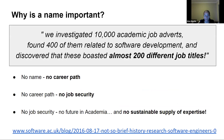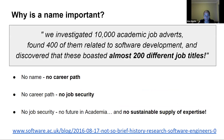Why was it so important that the SSI coined the term RSE? Around 2012, shortly after, they did a study looking at academic job adverts with some relationship to software development, and discovered there were almost 200 different job titles associated with those roles. The argument is: if there is no name for a role, there is no career path. If there's no career path, there's no job security. And if there's no job security, there's no future in academia for those people, and thus no sustainable supply of expertise.